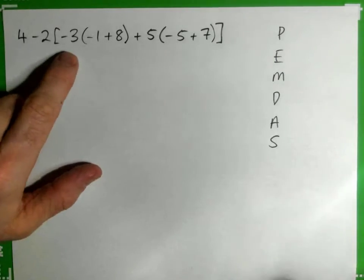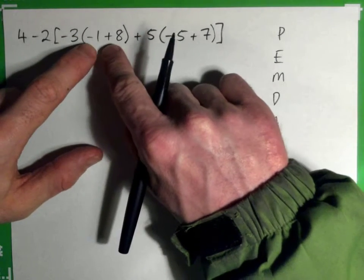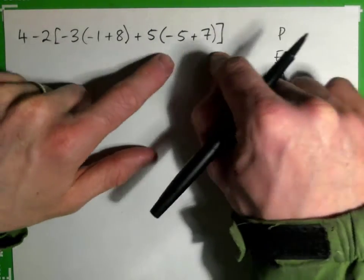All right, he's got 4 minus 2 times negative 3, and then in here we've got negative 1 plus 8, and so on.